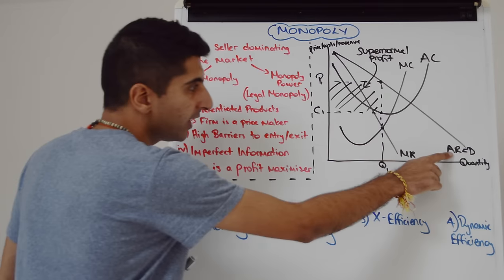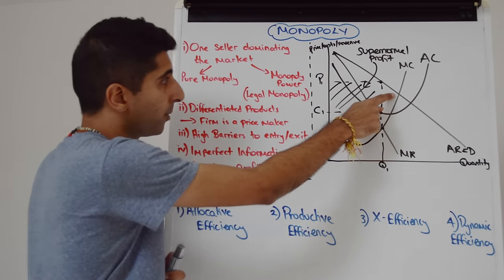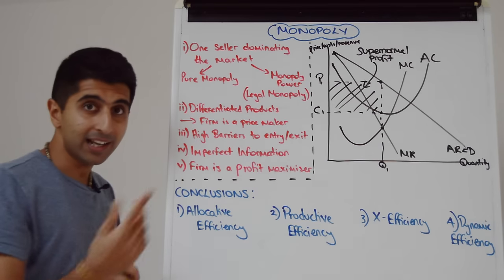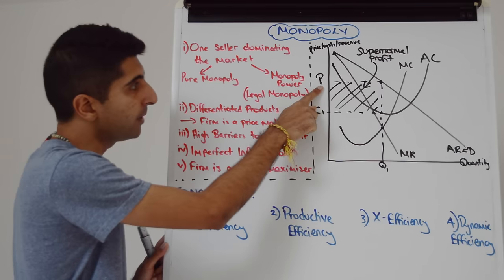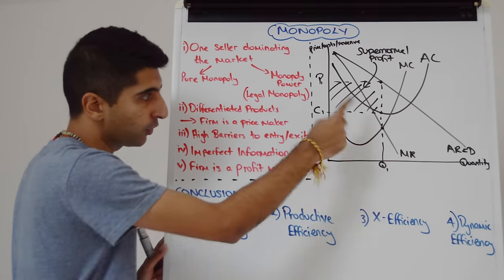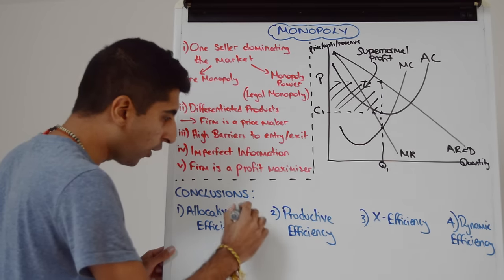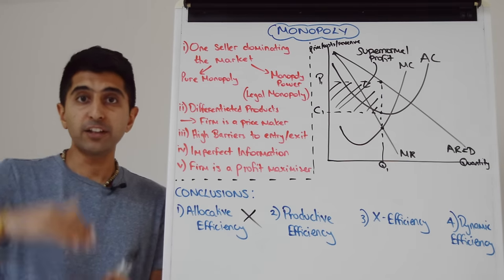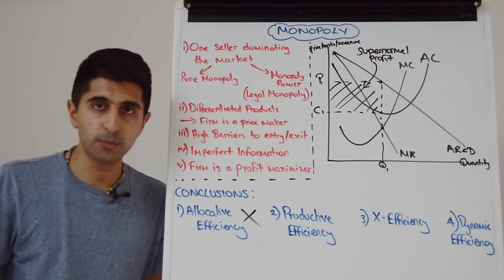Well, clearly where price equals marginal cost is over there. That's where competitive firms will be pricing and producing. We can clearly see here that at quantity Q1, a monopolist is charging a price of P1 much higher than marginal cost at the quantity of Q1. So a monopoly is definitely not allocatively efficient.